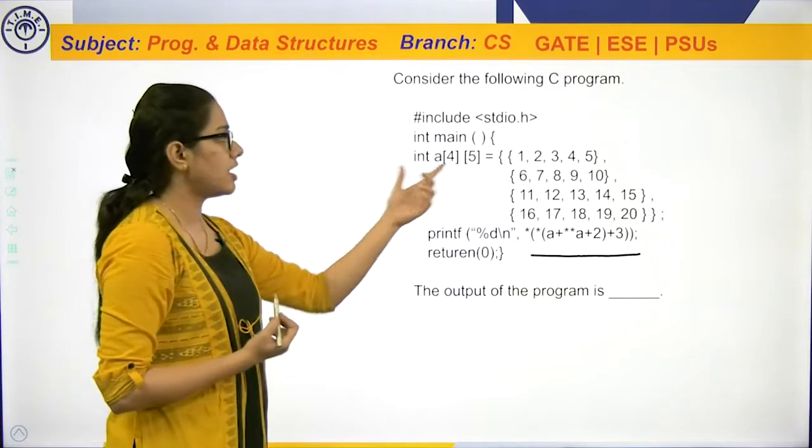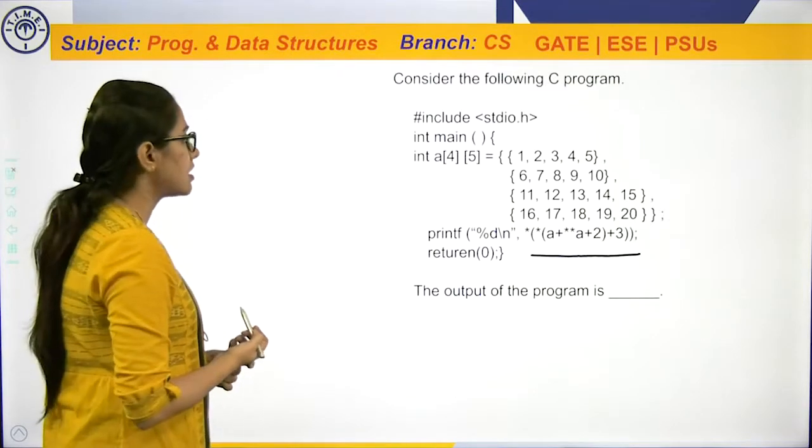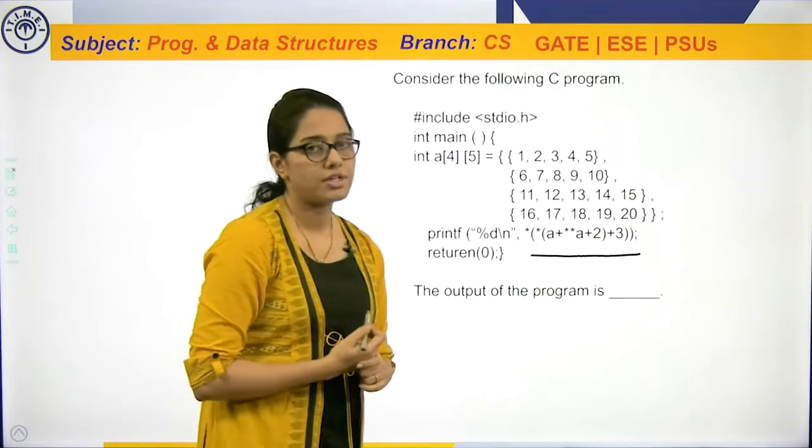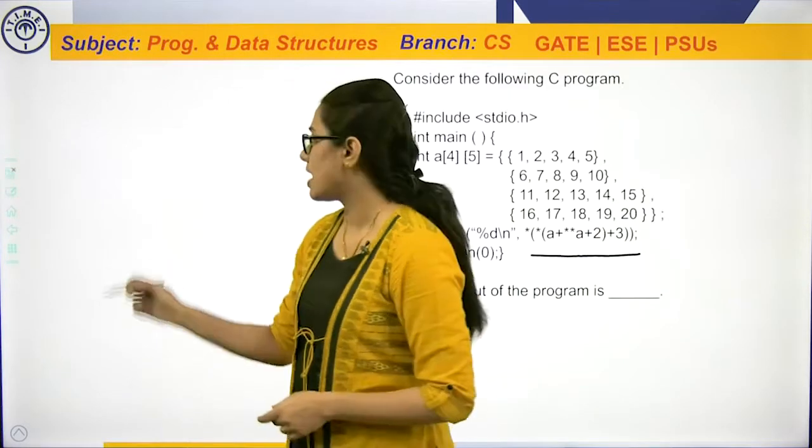You can see here the A is a two-dimensional array. Now, let us consider by default the row major order is used to store a two-dimensional array.